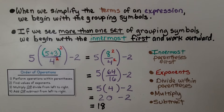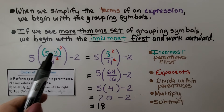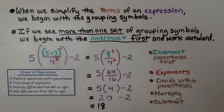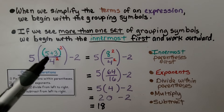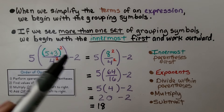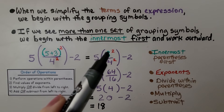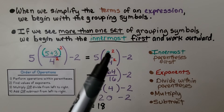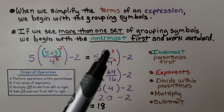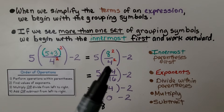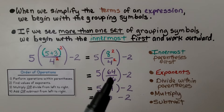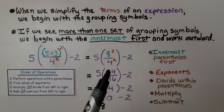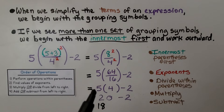When we simplify the terms of an expression, we begin with the grouping symbols. If we see more than one set of grouping symbols, we begin with the innermost first and work outward. The innermost grouping symbols here are the parentheses, so we do the numerator: five plus three gives us eight, raised to the second power. We then evaluate the exponents — eight squared is 64, four squared is 16. We divide: 64 divided by 16 is 4. Then we multiply: 5 times 4 is 20, minus 2 gives us 18.